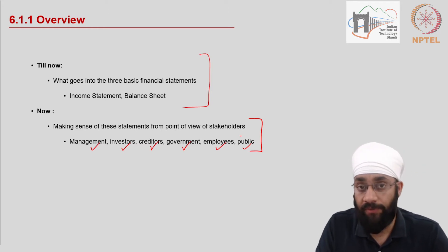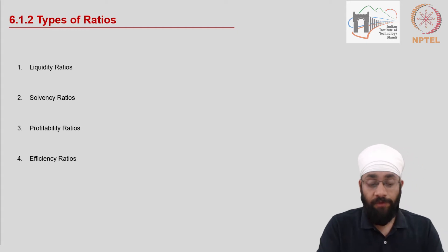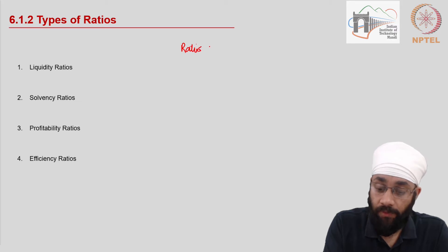There are four types of ratios that we utilize. Now ratio simply refers to a number which is a division of two numbers. So these ratios are used as indicators.